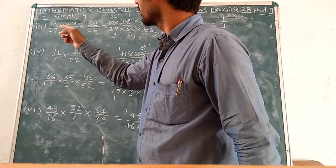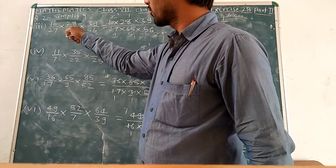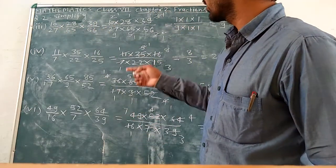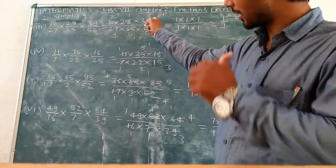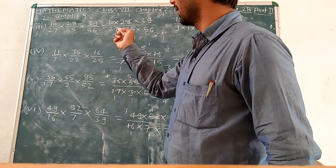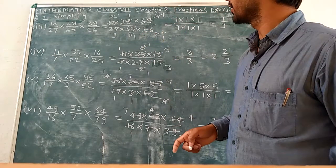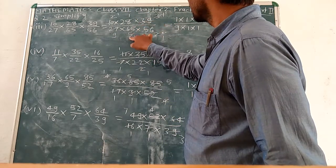Third part of question number 2: 10 upon 27 multiplied 28 upon 65 multiplied 39 upon 56 is equal to 10 multiplied 28 multiplied 39, which is numerator multiplied by numerator, upon product of denominator 27 multiplied by 65 multiplied by 56. Here we have 13,565.